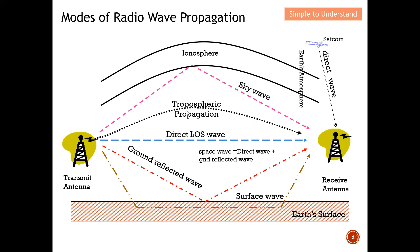Next is tropospheric propagation. Instead of a direct line of sight, the path of the electromagnetic wave actually bends slightly because of the different density of the atmosphere — this is what we call tropospheric propagation.